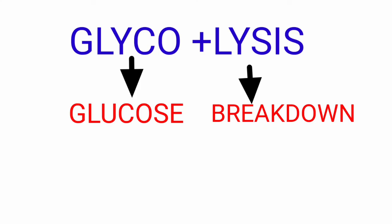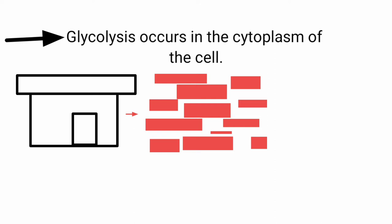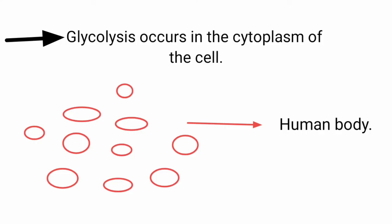Glycolysis occurs in our cells' cytoplasm. Cells form different types and together they form the human body. Our cells have a fluid-filled space called the cytoplasm.